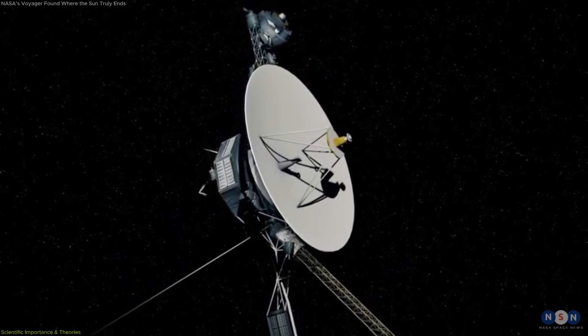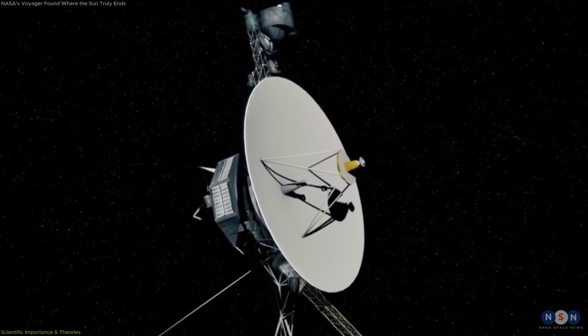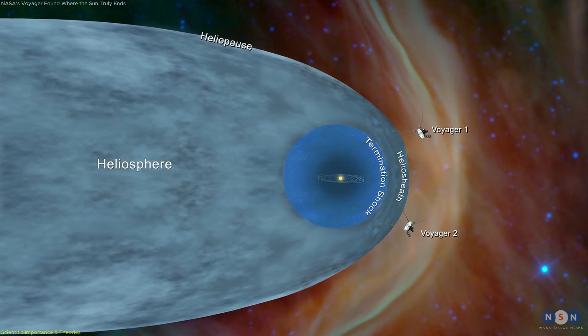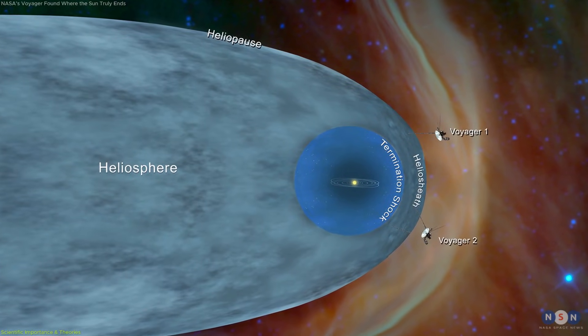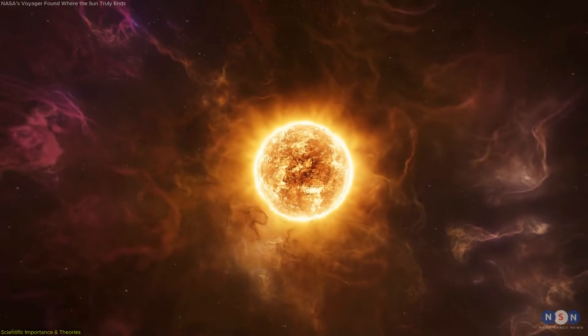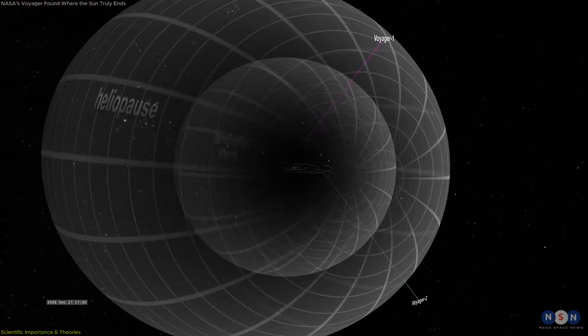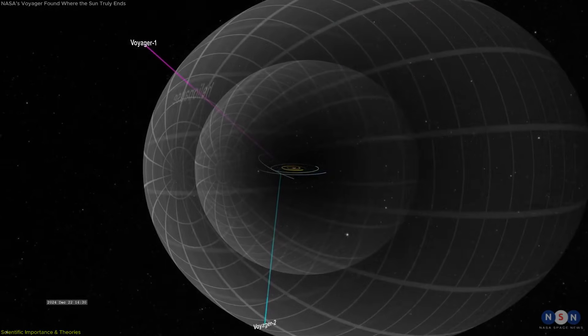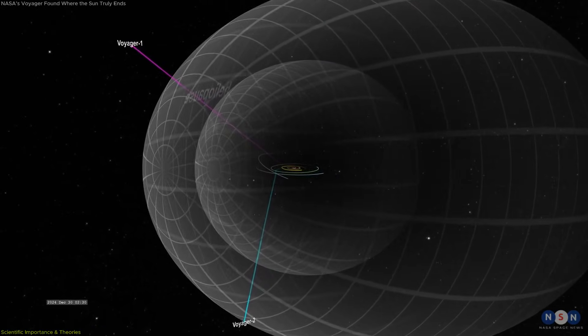Voyager showed that this shielding effect is sharper and more structured than expected. As the spacecraft crossed the heliopause, the number of galactic cosmic rays increased rapidly, while solar particles nearly disappeared. This confirmed that the boundary acts as a filter, separating two very different radiation environments.